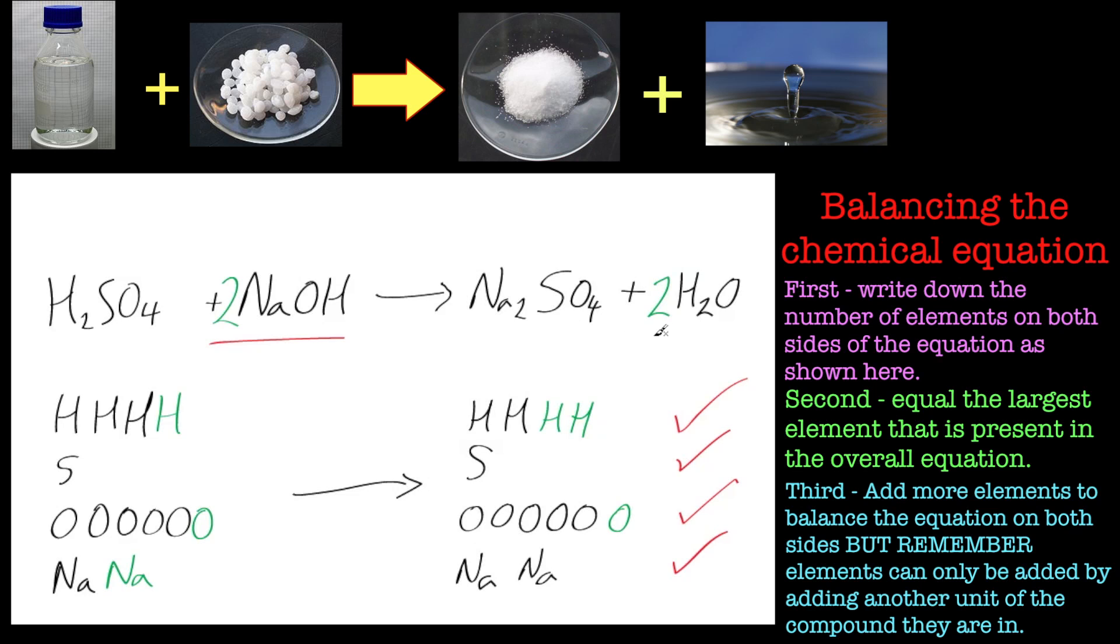So that is fully balanced now. And this is a really good method for looking at balancing equations. Just write the elements down, it's as simple as that. Unless you've got a really complex molecule, which you probably won't have at this stage anyway, this is a really good way of balancing them out. So that's sulfuric acid plus sodium hydroxide going to sodium sulfate and water, nice and balanced. So until next time, bye for now.